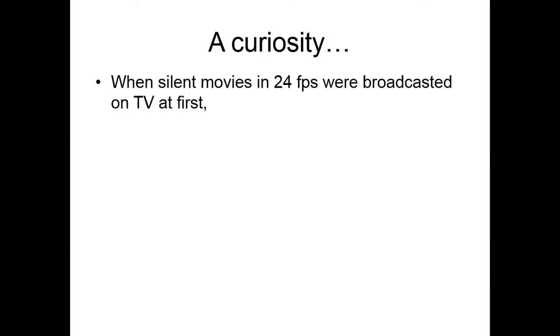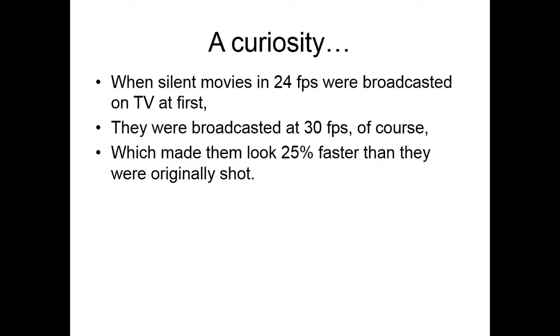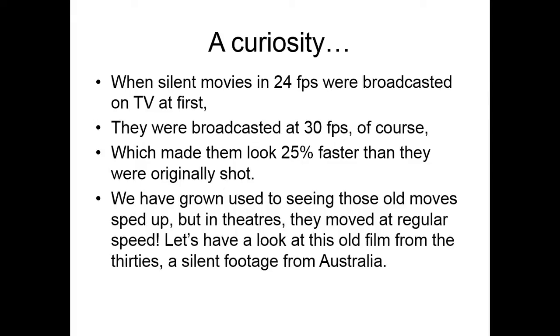A curiosity. When silent movies in 24 fps were broadcasted on TV at first, they were broadcasted at 30 frames per second, of course. Which made them look 25% faster than they were originally shot. We have grown used to seeing those old movies on TV sped up. But in theaters, they moved at regular speed.